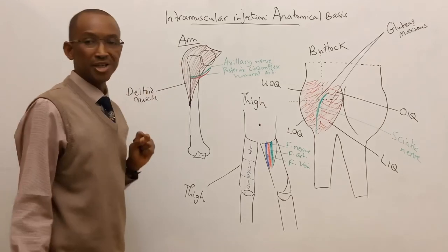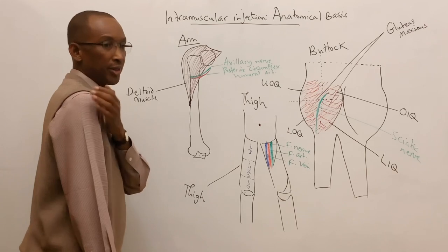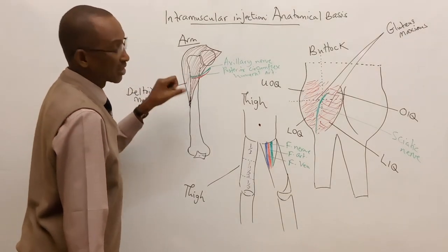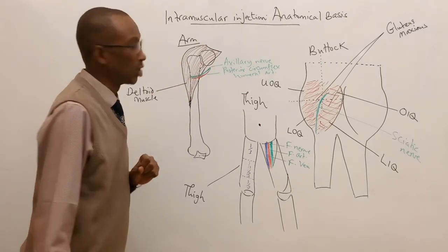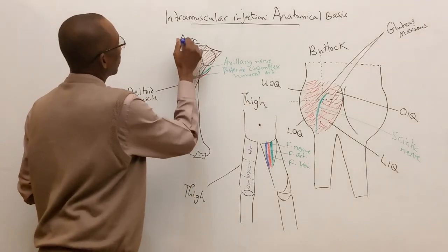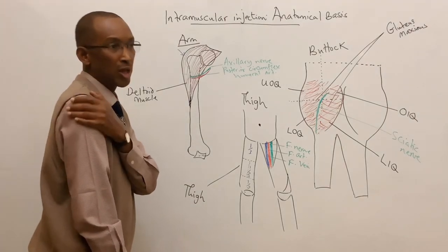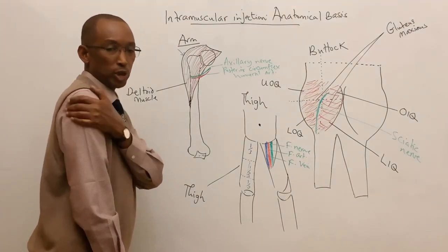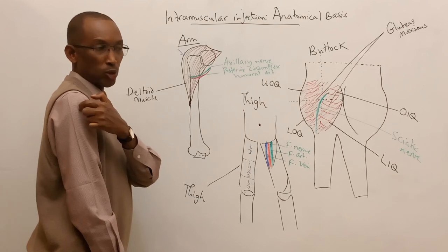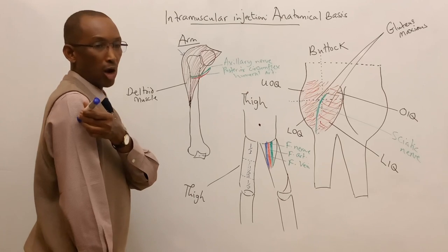To give an intramuscular injection in the arm, you must inject into the middle fibers of the deltoid, ensuring the neurovascular bundles are not affected. You inject at the upper part of the deltoid, at the area of maximal convexity — where the deltoid makes a visible bulge on the shoulder — and place the needle there.